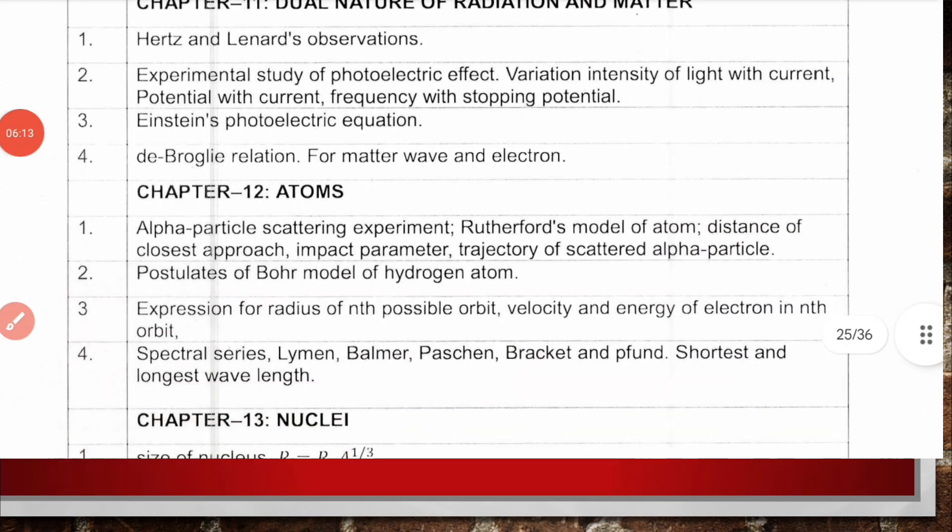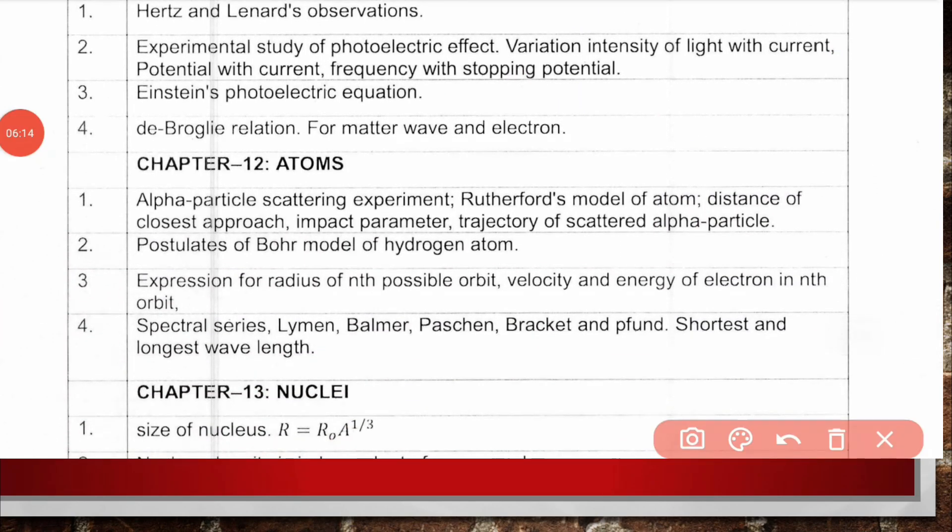Chapter 12, Atoms: alpha particle scattering experiment, Rutherford's model of atom, distance of closest approach, impact parameter and trajectory, postulates of Bohr's model of hydrogen atom, expression for radius of nth possible orbit, velocity and energy of electron in nth orbit, spectral series including Lyman, Balmer, Paschen and Brackett fund, and shortest and longest wavelength calculations which are most important.